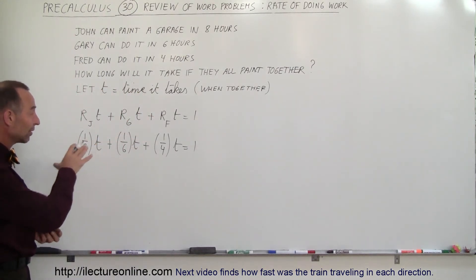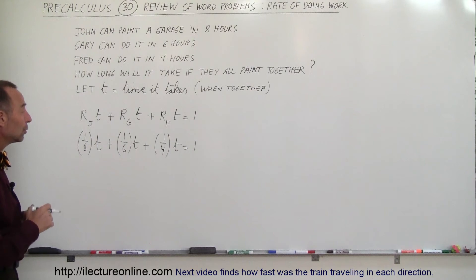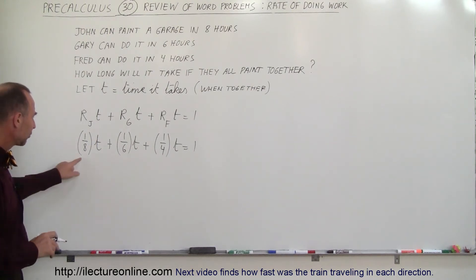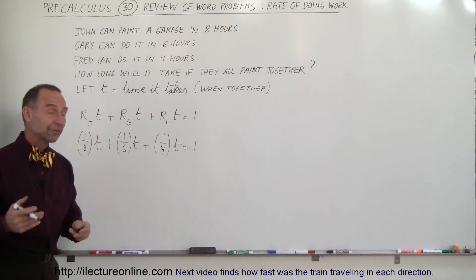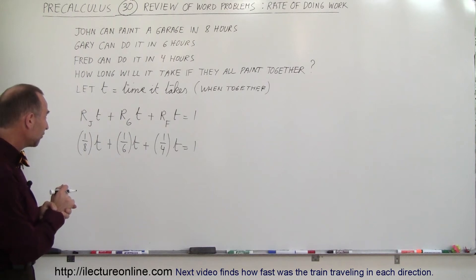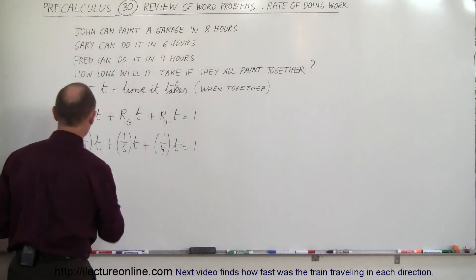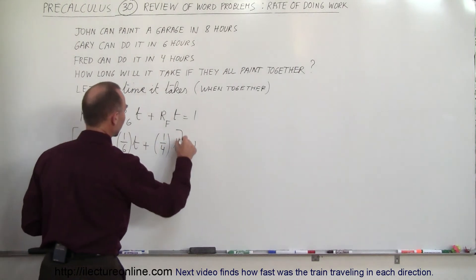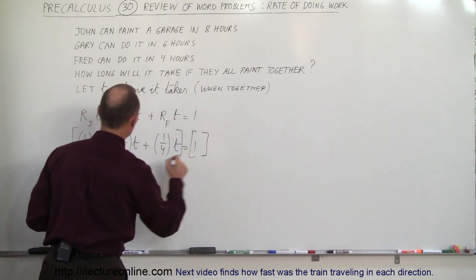And all we have to do here is figure out what t is equal to and we know how long it takes for them to paint the garage. So here we see that we have three denominators and we're going to have to find the lowest common denominator. And it looks like twenty-four is probably it. So we're going to multiply everything by twenty-four.